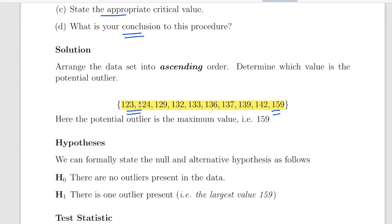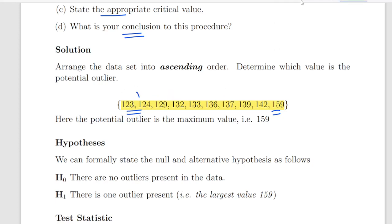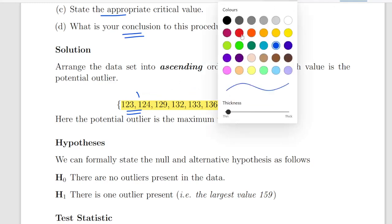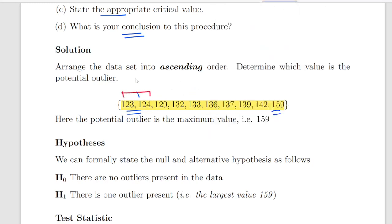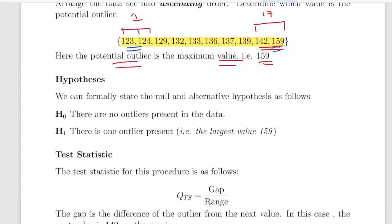Is 123 that far away from the rest of the values, or is 159 far away from the highest values after it? The gap between 123 and 124 — the lowest and next lowest value — is literally one, so that is not the outlier. If there is a number right beside it that is almost identical, that is hardly an outlier. However, the gap between the highest value and the second highest value is 17, so the potential outlier is the maximum value, 159. Sometimes you are told explicitly which is the potential outlier, but sometimes you have to make a judgment.